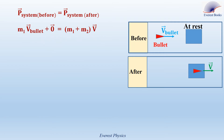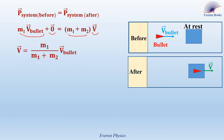P system before collision is equal to M1 V bullet, which is the linear momentum of the bullet, plus 0, which is the linear momentum of the block since it is at rest. P system after collision is equal to M1 plus M2 times V. M1 plus M2 is the total mass of the system, and V is the velocity of the system after collision. So, rearranging: V equals M1 over (M1 plus M2) times the velocity of the bullet.